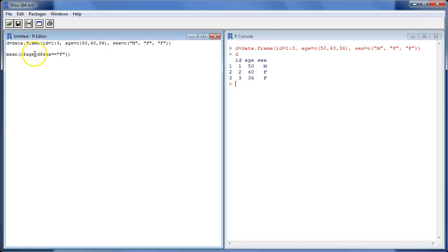And here we have the piece of code where we want the mean age of the women. And as you can see, we have here D dollar age. If I run just that part of the code, I get the ages 50, 40, 36.